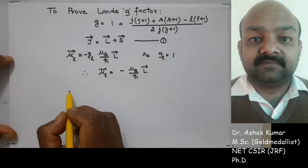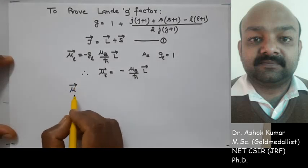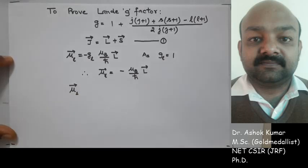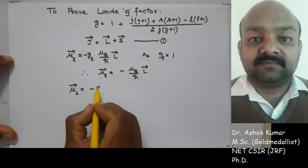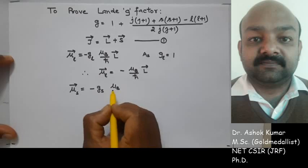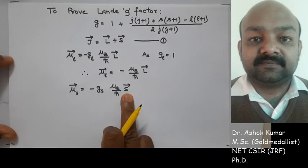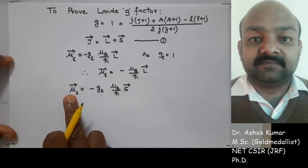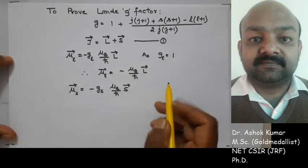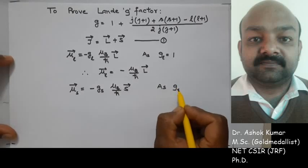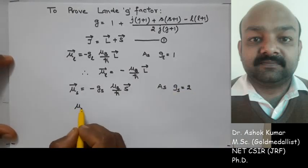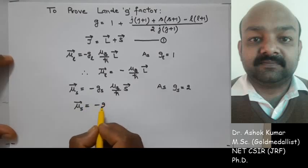Similarly, the magnetic dipole moment associated with the electron due to its spinning motion is called the spin magnetic dipole moment, whose value is given here. Again, the spin angular momentum is opposite to the spin magnetic dipole moment, as indicated by the negative sign. With g_S equal to 2, μ_S is given accordingly.